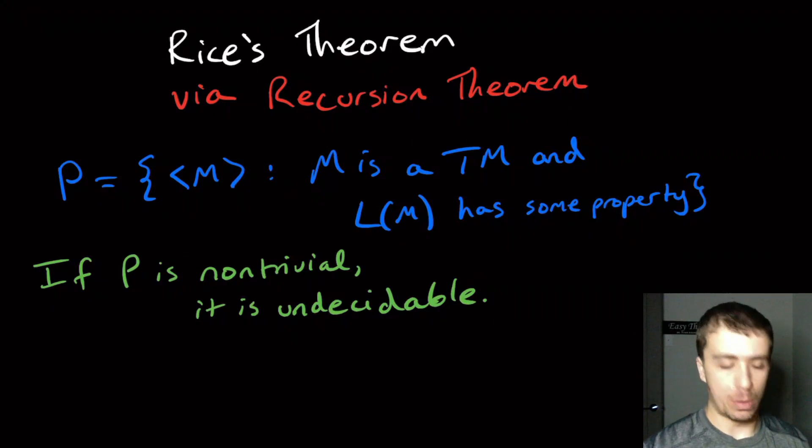We're going to make a language here called P which is a set of Turing machine descriptions. M is a Turing machine, and what we have is that the language of this machine has some property.